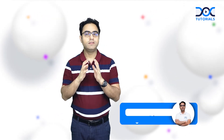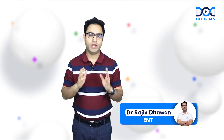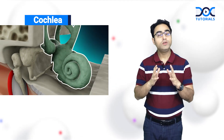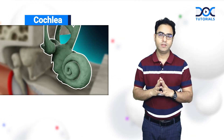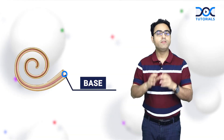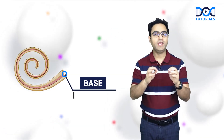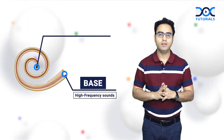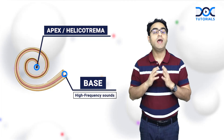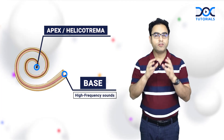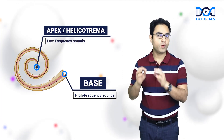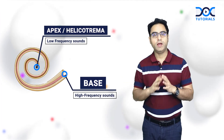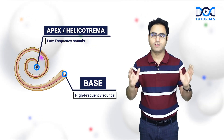My dear friends, let us see a very important part of the inner ear: the cochlea. As you all know, the cochlea has two and a half turns, and the basal turn of the cochlea is responsible for hearing high frequency sounds. Now look at the apex of the cochlea. The apex, which is also called the helicotrema, is responsible for hearing low frequency sounds — meaning each part of the cochlea is responsible for hearing a unique frequency sound.